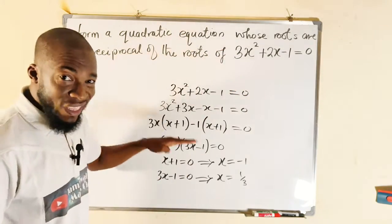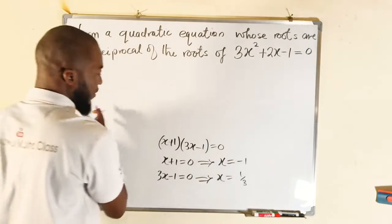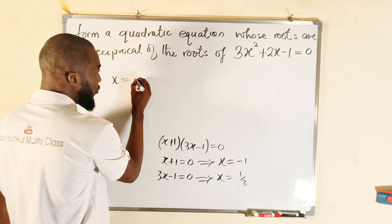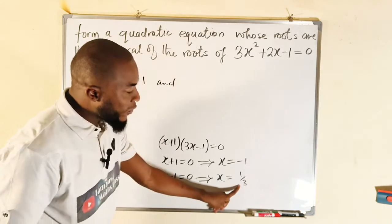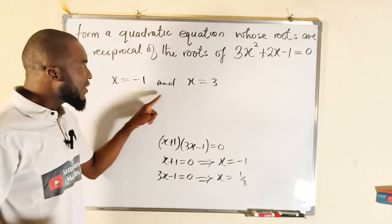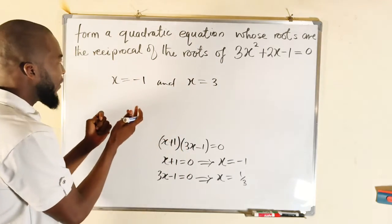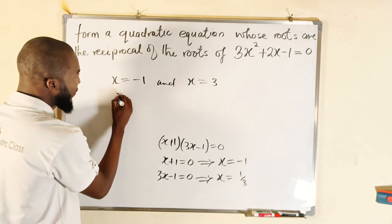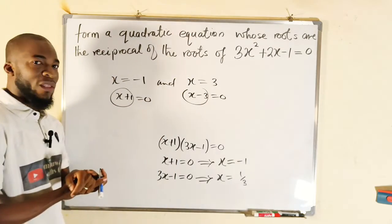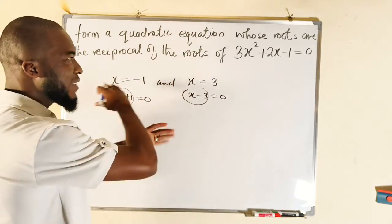But we are asked to form another quadratic equation whose roots are the reciprocal of these. The reciprocal of negative 1 is still negative 1, so that equation will have one of its roots as negative 1. The reciprocal of 1 over 3 will be 3, so the other root will be 3. We want to form that quadratic equation whose roots are negative 1 and positive 3. This tutorial will be very intuitive so that you get to understand all these aspects.